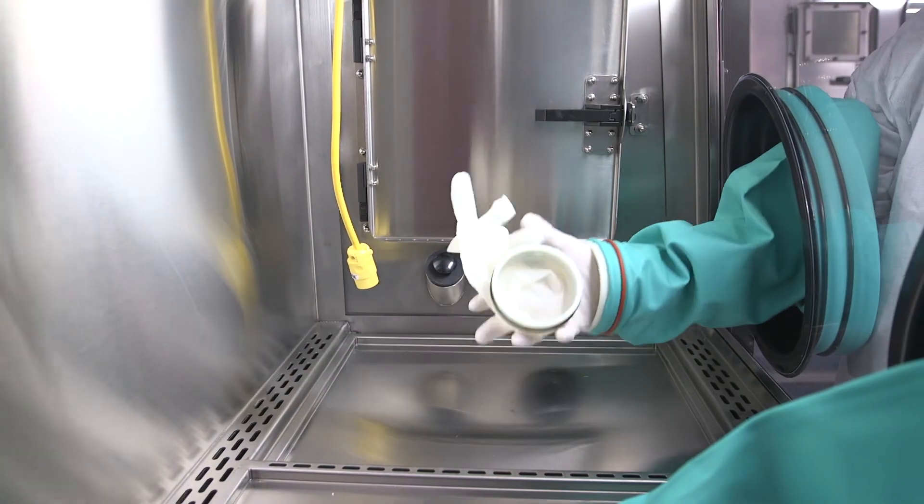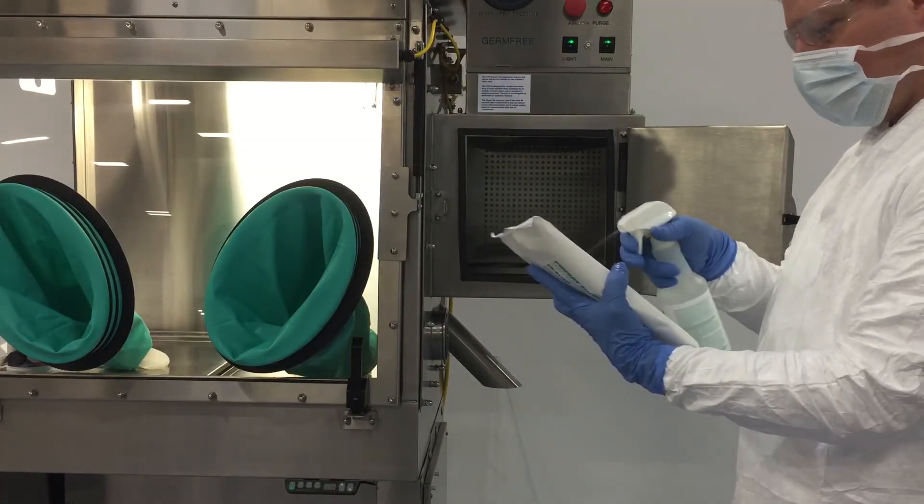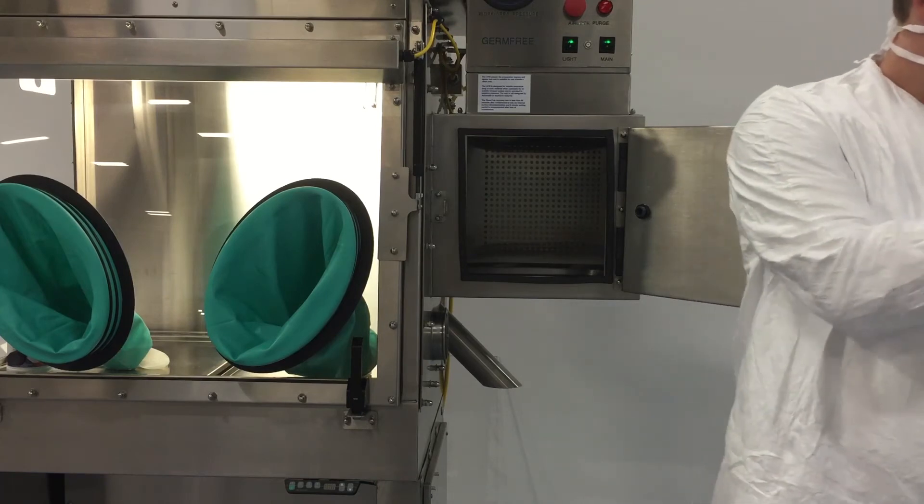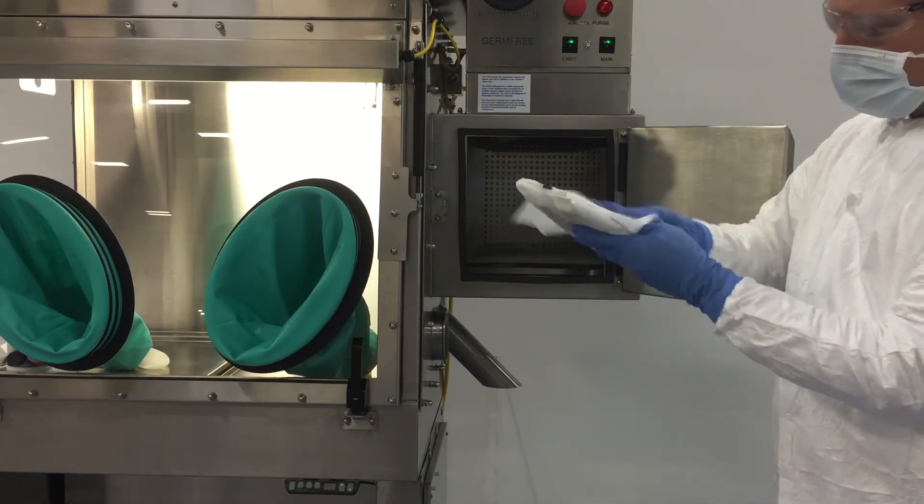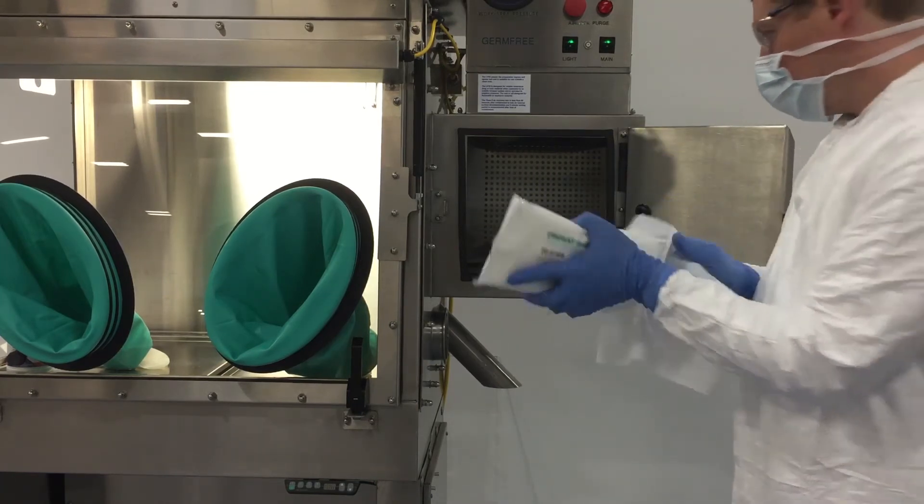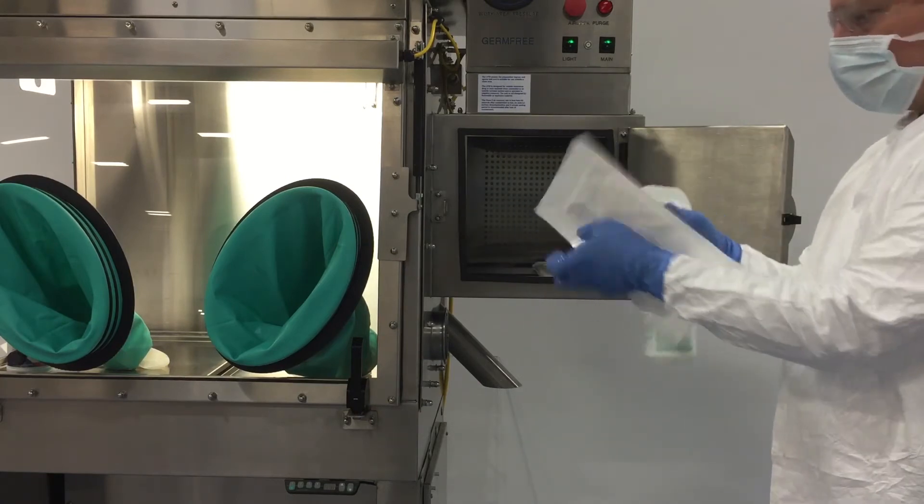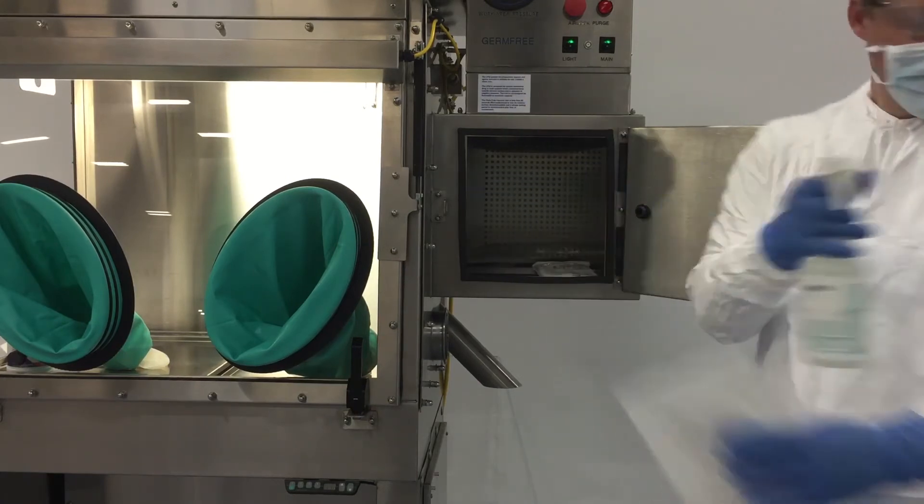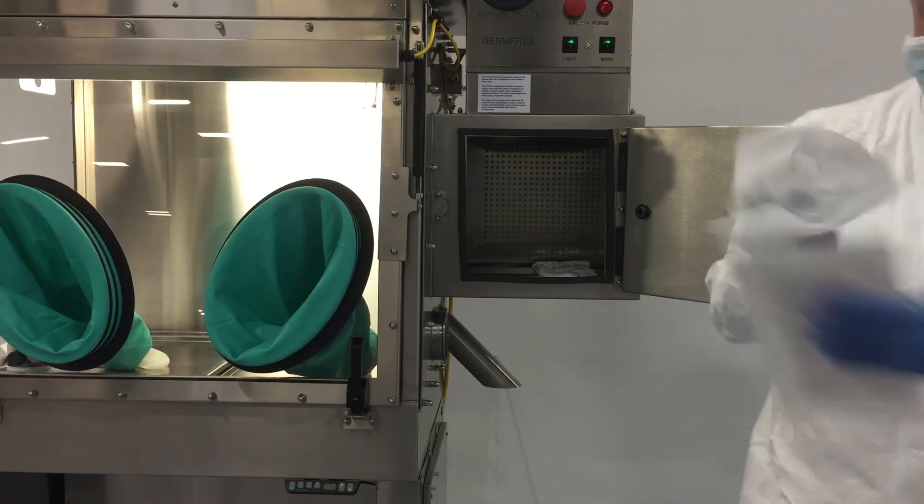When it's necessary to don sterile gloves inside the isolator, use the following procedure. Wipe down the sealed package of sterile gloves with a sterile 70% isopropyl alcohol solution before placing it into the airlock. Do this for any other materials you're bringing into the isolator.